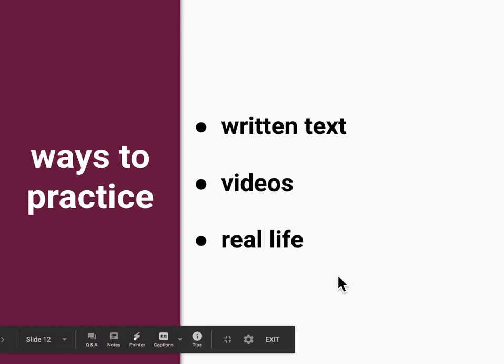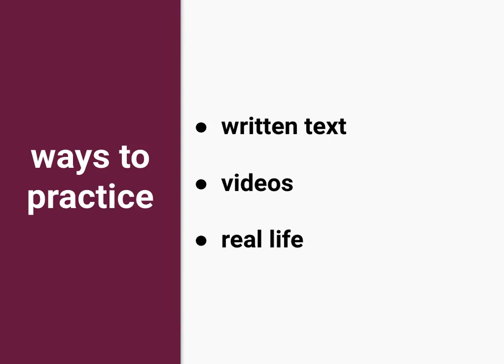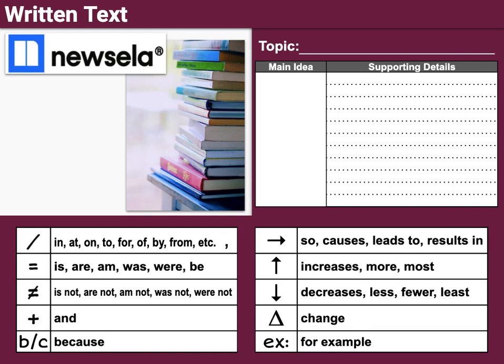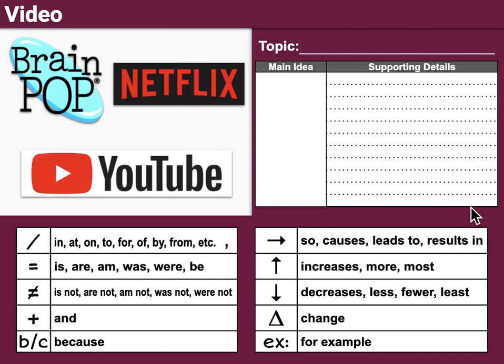Finally, let's talk about some different ways that you can practice your note-taking. We're going to start with written text, then videos, and finally real life. It's a good idea to start with written text because text on a page or screen is not going anywhere — it's a little simpler and easier to transfer text onto a page as notes. Then it might be a good idea to move on to videos, which are a great way to practice because you have to listen carefully, but you can also pause and rewind to take down those thoughts.